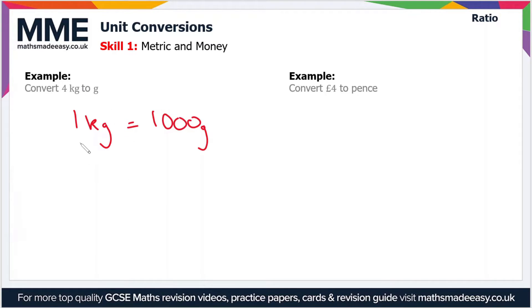In this case, 1 kilogram is a thousand times the base unit of a gram. So to convert 4 kilograms to grams, just multiply this by 4. So 4 kilograms equals 4000 grams.